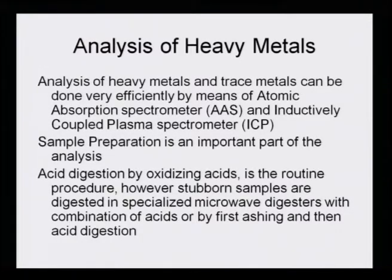Acid digestion by oxidizing acids is the routine procedure. However, stubborn samples are digested in specialized microwave digesters with a combination of acids, or by first ashing and then acid digestion. As seen in previous lectures, focused microwave digesters are sometimes required to digest stubborn samples. A programmed procedure may also be applied where a variety of acids are added one by one to completely digest the sample.